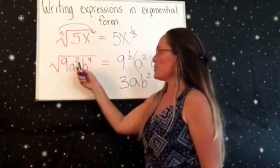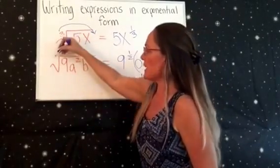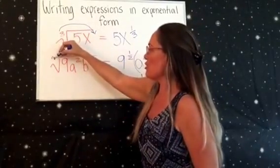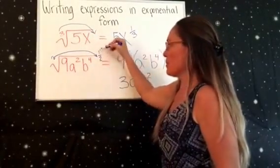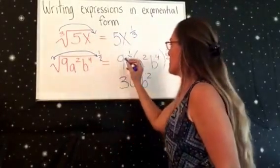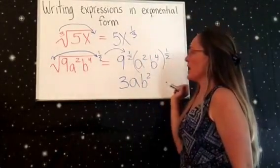So we had 9a squared b to the 4th in a square root. We basically had no number here, but that's like a 2. So we put the 2 on the outside and we always put that on the bottom of a fraction where 1 is on the top, which is what we did here. And then we also have a squared b to the 4th times one-half.